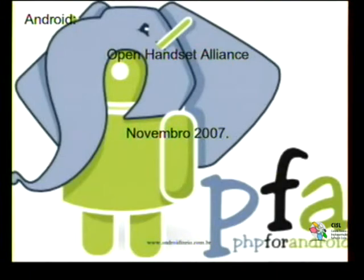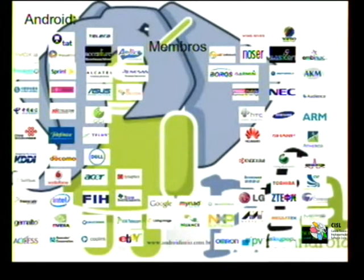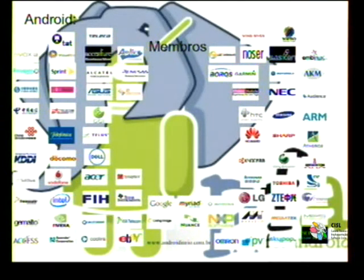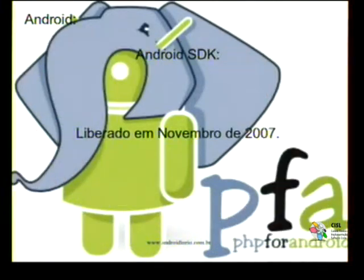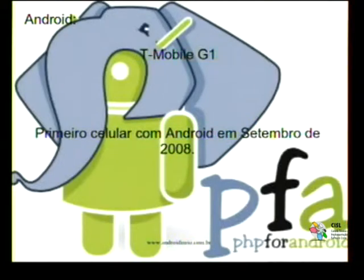Some of the alliance members include Telefónica, Huawei, Dell, Acer, Samsung, ARM, eBay, NVIDIA, and others. In 2007, the Android SDK was released. In 2008, the first Android cell phone arrived in September.